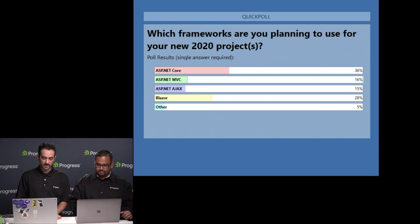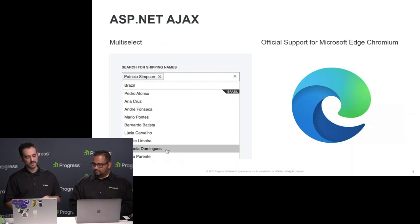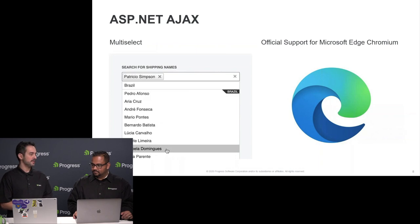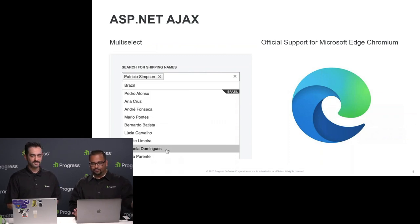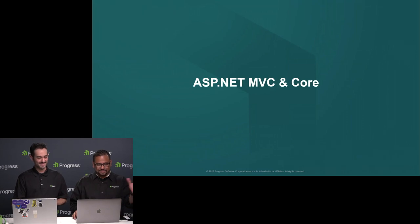Let's talk about ASP.NET Ajax first — our oldest product — and then work our way up to the bleeding edge. We have a brand new multi-select component for the ASP.NET Ajax platform. It's a nice way to do a multi-select where you get a list of items and pick through them — great for adding tags to a form. We're also keeping the platform fresh by supporting the latest browsers, with new support for the Microsoft Edge Chromium Edition.